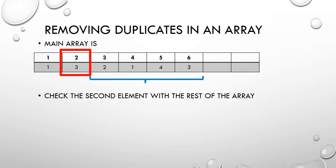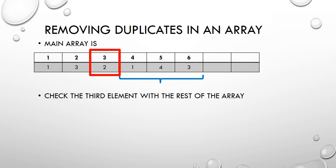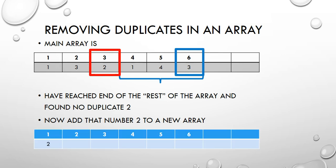We check the three against a two - not a duplicate. Three and one - not a duplicate. Three and four - not a duplicate. When we get to the final value, we can see there are two threes - that is a duplicate. So we stop looking and won't do anything with that value. We now move to the third element, the two, and check it with the rest of the array. There's no two at position four, five, or six. We reached the end of the array and found no duplicate - so the two is unique and we add it to our brand new array at position one.